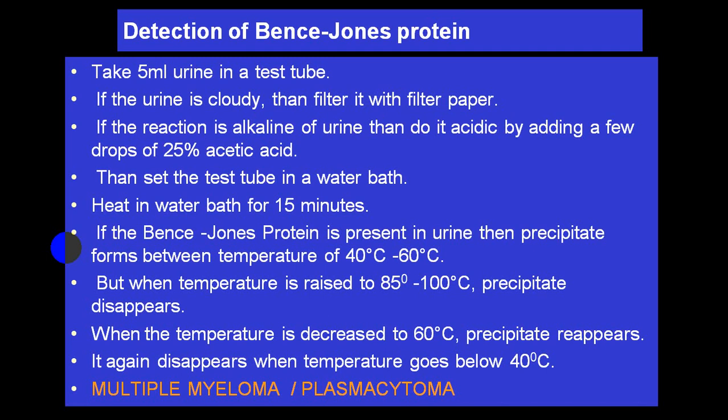For detection of Bence Jones protein: take 5 ml of urine; if cloudy, filter it. If alkaline, acidify with a few drops of 25 percent acetic acid. Heat in a water bath for 15 minutes. If Bence Jones protein is present, precipitate will appear between 40–60 degrees Celsius; on further boiling the precipitate disappears, and it reappears on cooling back to 60 degrees, then disappears again below 40 degrees. This is in favor of Bence Jones protein. Multiple myeloma and plasmacytoma are the most common conditions showing Bence Jones protein in urine.